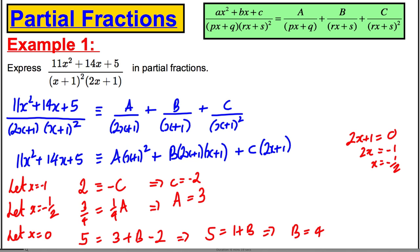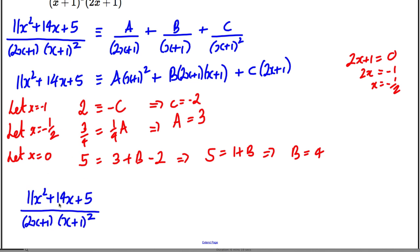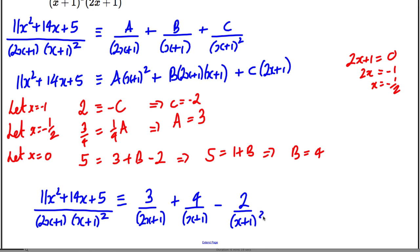We'd finish off by writing out our final answer. So this expression is therefore identical to three over (2x + 1), plus four over (x + 1), subtract two over (x + 1)². And that would be the answer in partial fractions. That's it for this video.